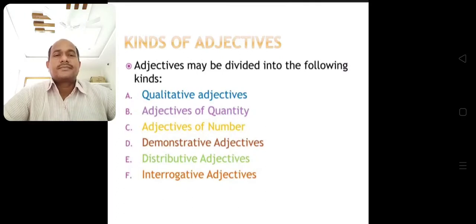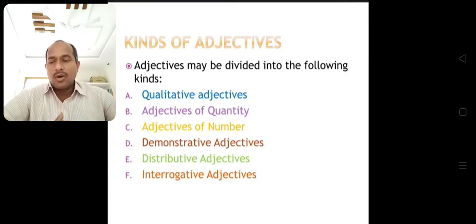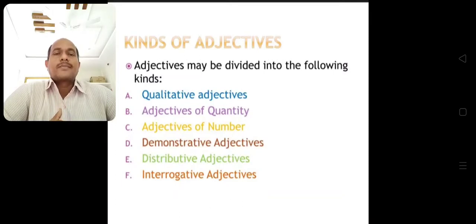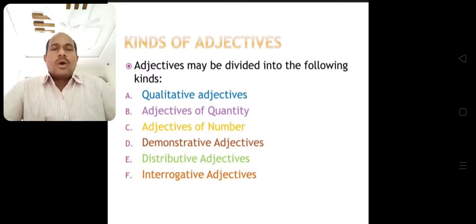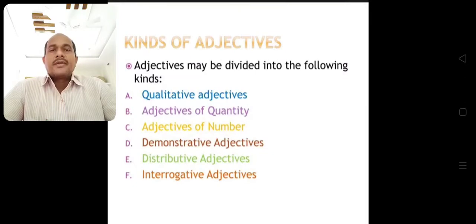Then, kinds of adjectives. Adjectives may be divided into the following kinds: qualitative adjectives, adjectives of quantity, adjectives of number, demonstrative adjectives, distributive adjectives, interrogative adjectives. These are the main kinds of adjectives.